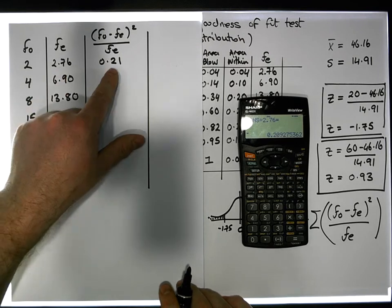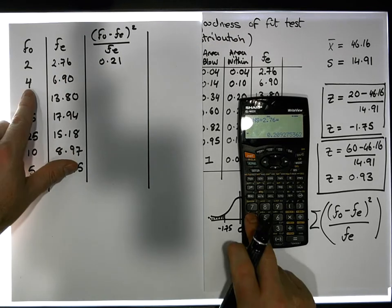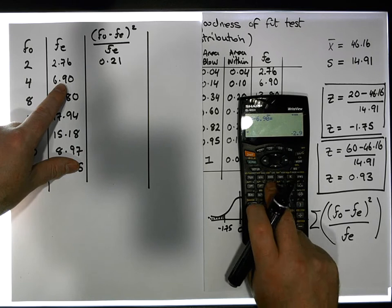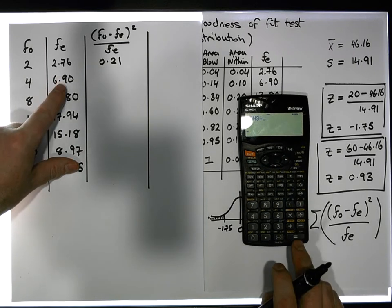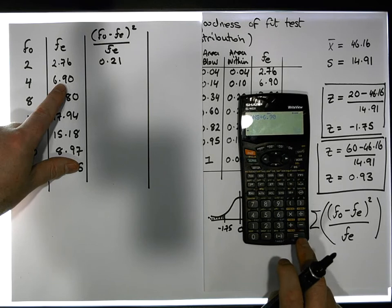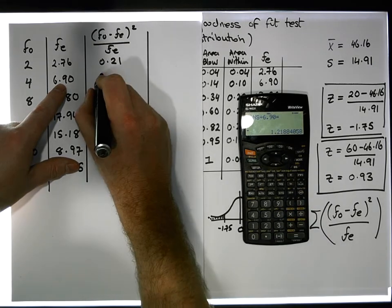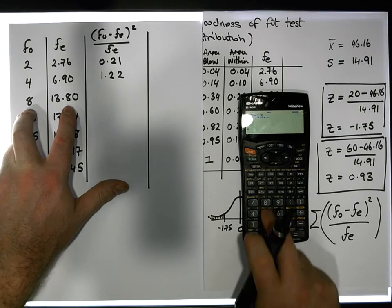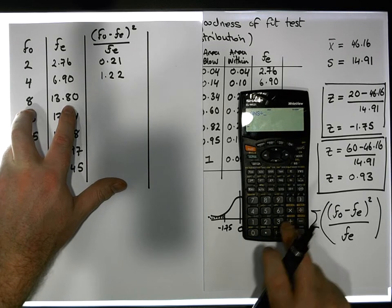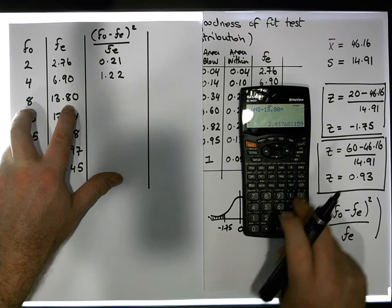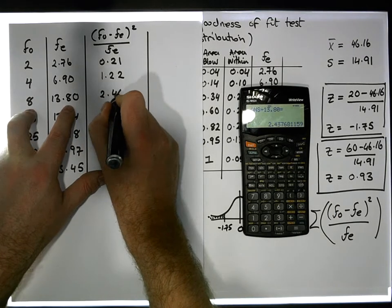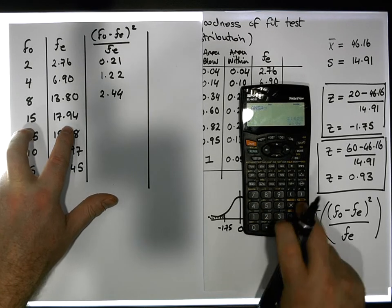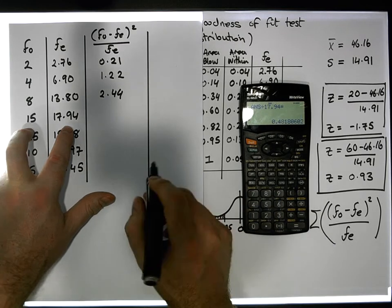The next value is 4 minus 6.90, which gives approximately 2.90. Squaring that and dividing by the expected frequency of 6.90 gives approximately 1.22. The next value is 8 minus 13.80 squared divided by 13.80, which gives approximately 2.44. Then 15 minus 17.94 squared divided by 17.94 gives approximately 0.48.